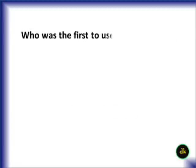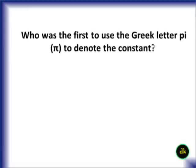Who was the first to use the Greek letter Pi to denote the constant? William Jones.